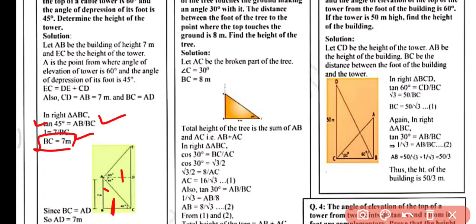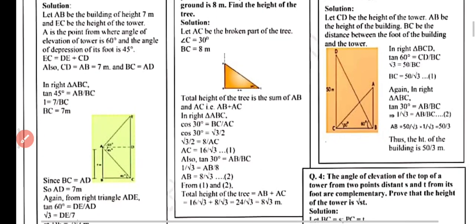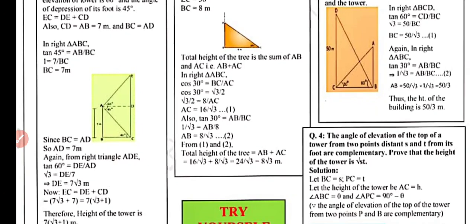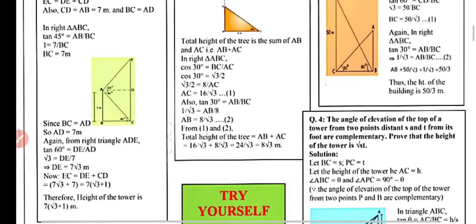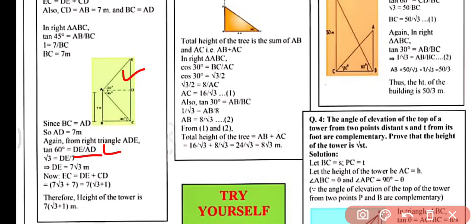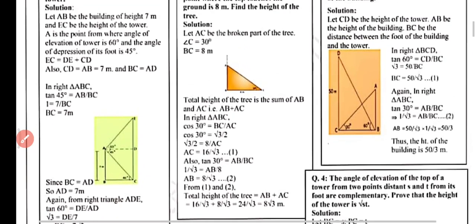Now in right-angle triangle ADE, tan60° equals DE/AD, so √3 equals DE/7, giving DE = 7√3 meters. Therefore EC equals ED plus CD equals 7√3 + 7. Taking 7 as a common factor, the height of the tower is 7(√3 + 1) meters.